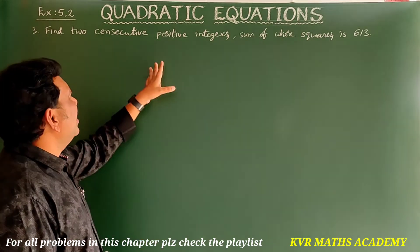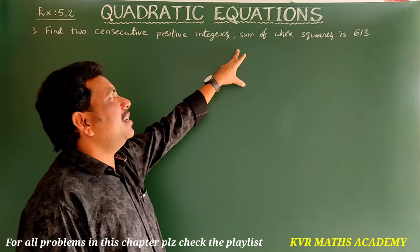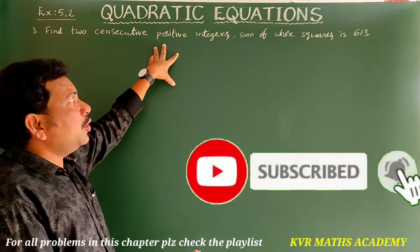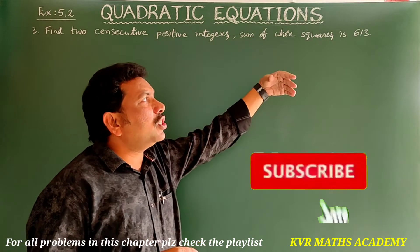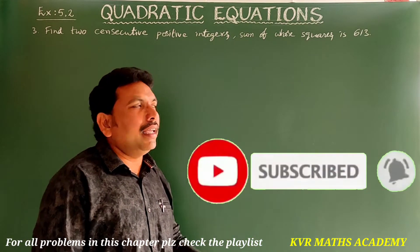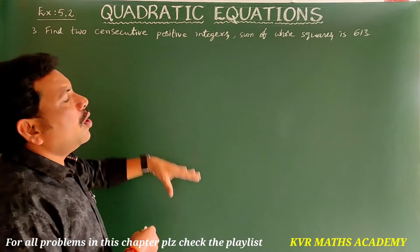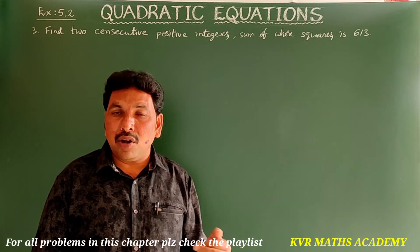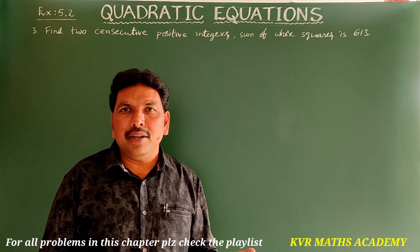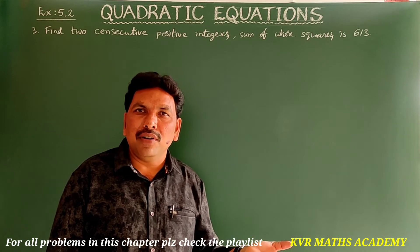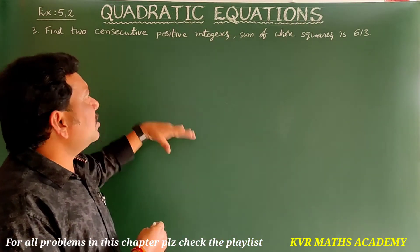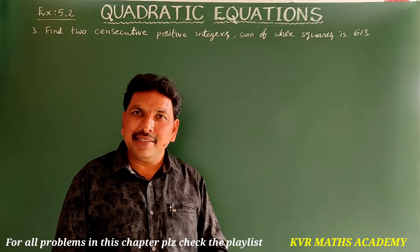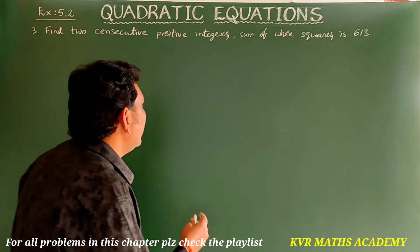Next question: Find two consecutive positive integers, the sum of whose squares is 613. Suppose one integer is x, then the next consecutive one is x plus 1. Let's take this as our solution.